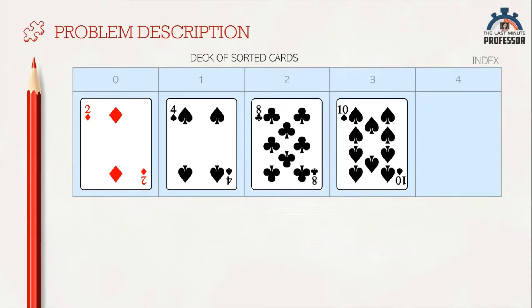So cards[0] refers to 2, cards[1] refers to 4, cards[2] refers to 8, cards[3] refers to 10.